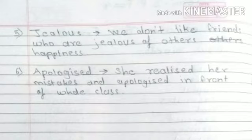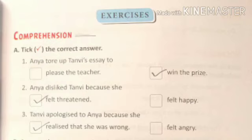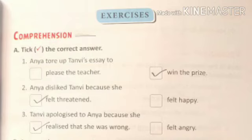Now children we are going to learn tick the correct answer. Please open page number E33 from your English literature book. Question number 8: First one is Anya tore Tanvi's essay — to win the prize. Next: Anya disliked Tanvi because she felt threatened. Next, third one: Tanvi apologized to Anya because she realized that she was wrong.